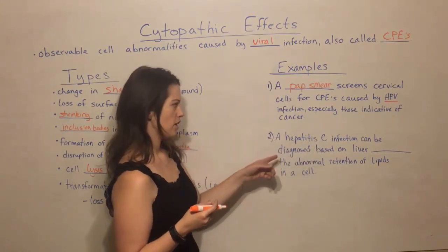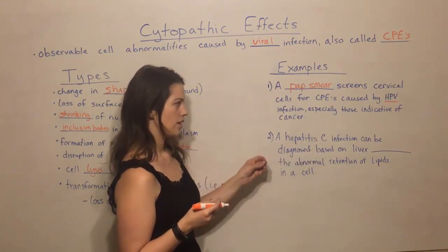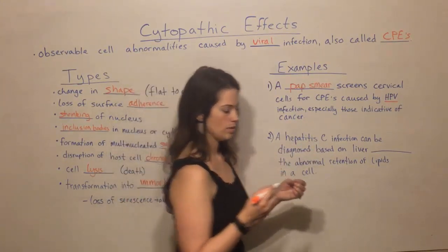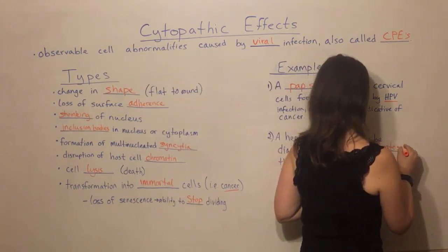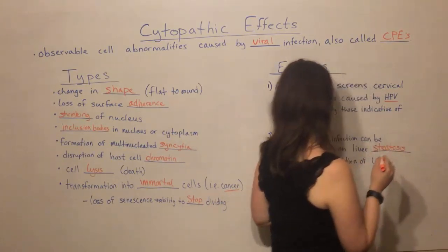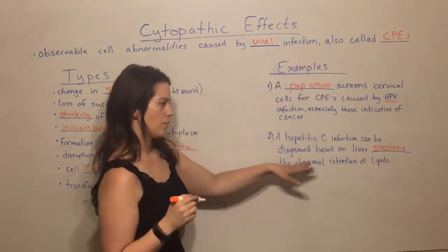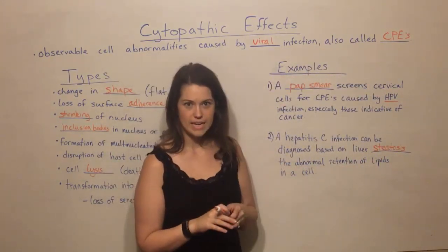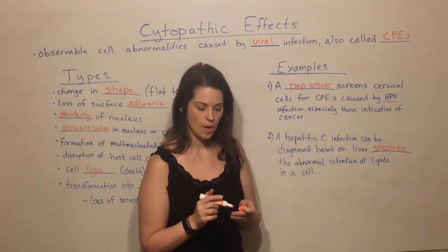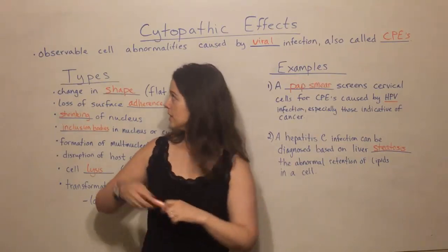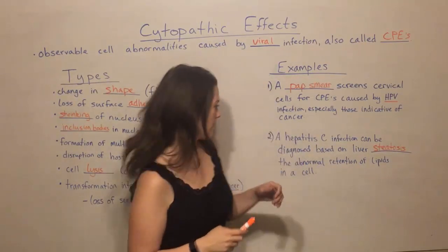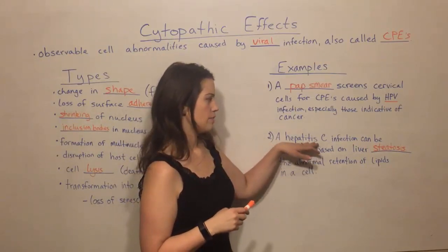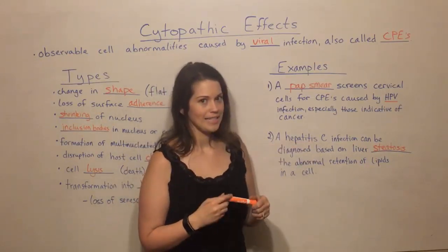Another way CPEs can be used diagnostically is with a hepatitis C infection. A hepatitis C infection can often be diagnosed based on something called liver steatosis — the abnormal retention of lipids in a cell. That's one of these observable cell abnormalities that can be linked back to a hepatitis C infection.